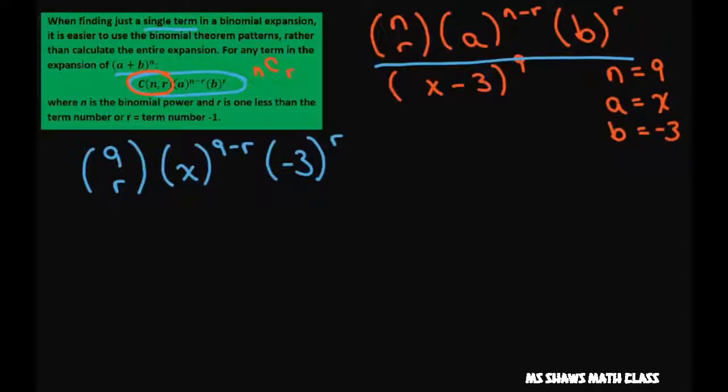And all we're going to look at is the x here because we want it to be x to the 5th. So if I look at this as x to the 9 minus r and we want this to be x to the 5th and I solve for r, I have 9 minus r equals 5. So clearly r is 4.